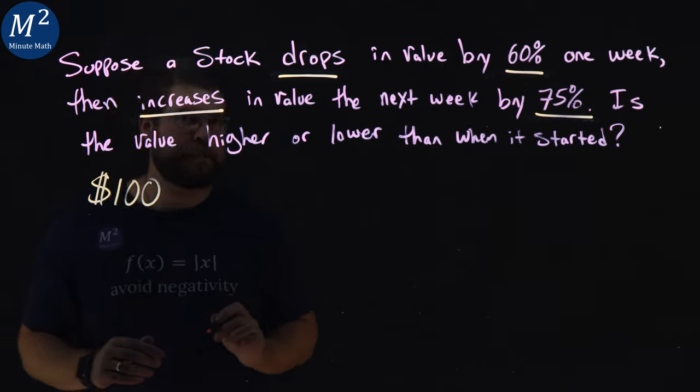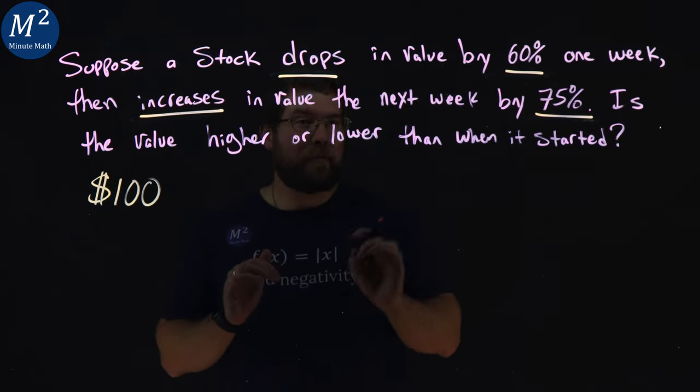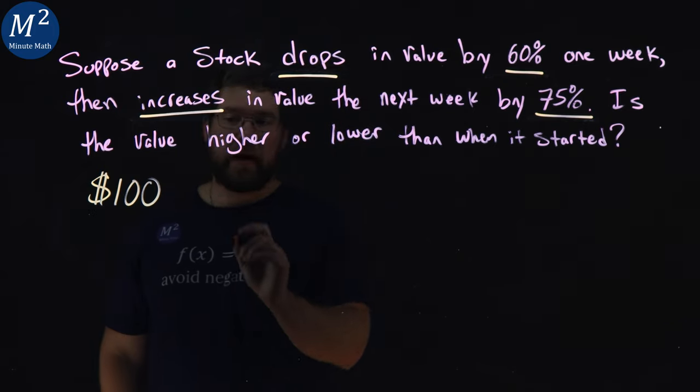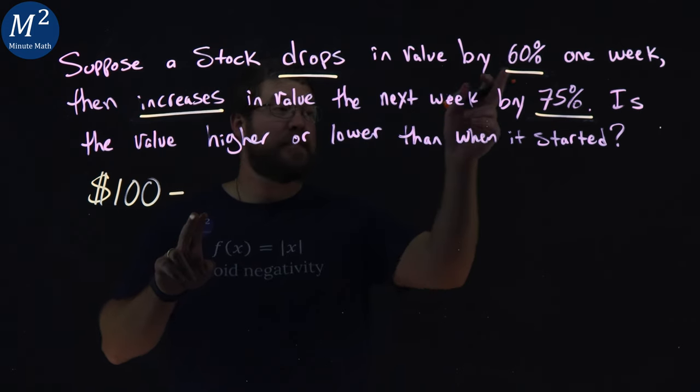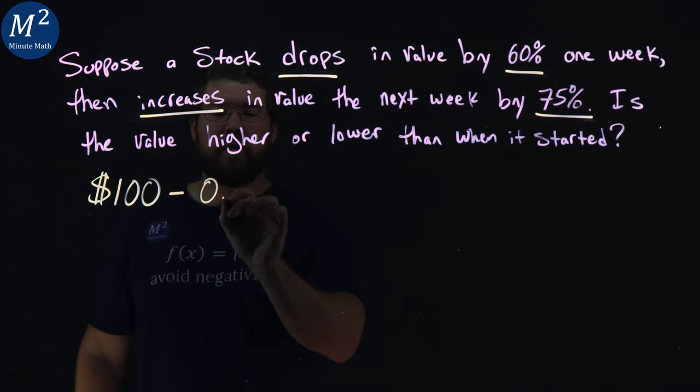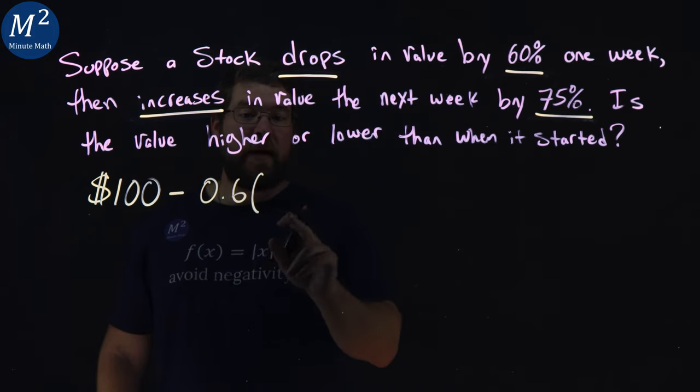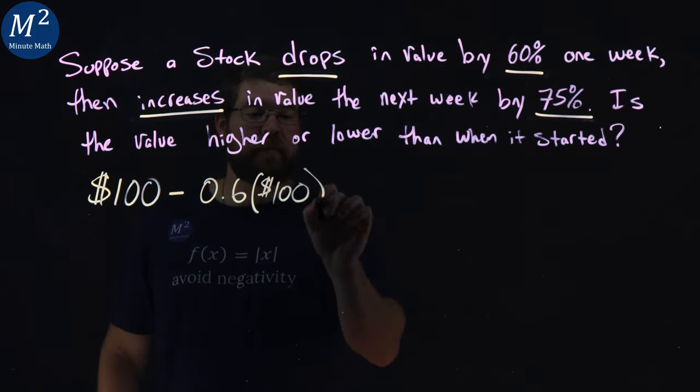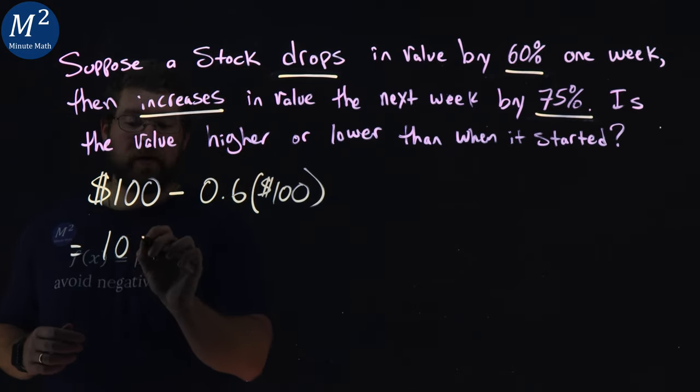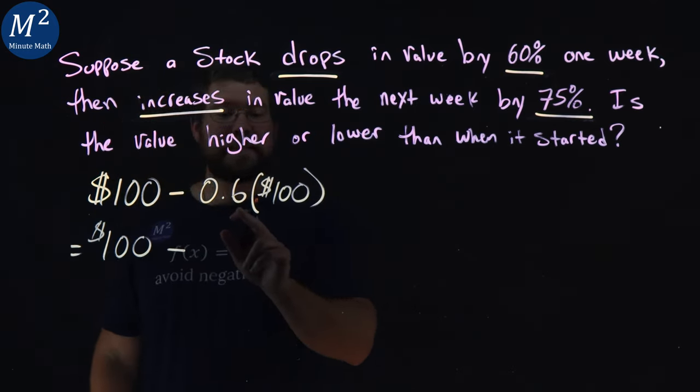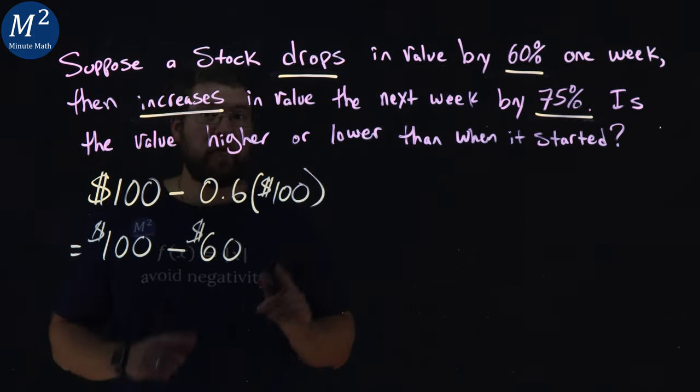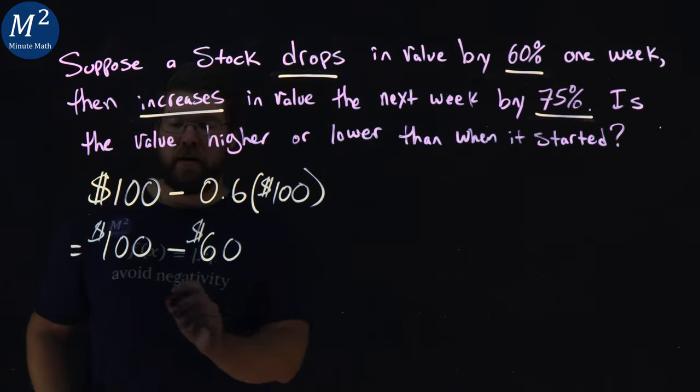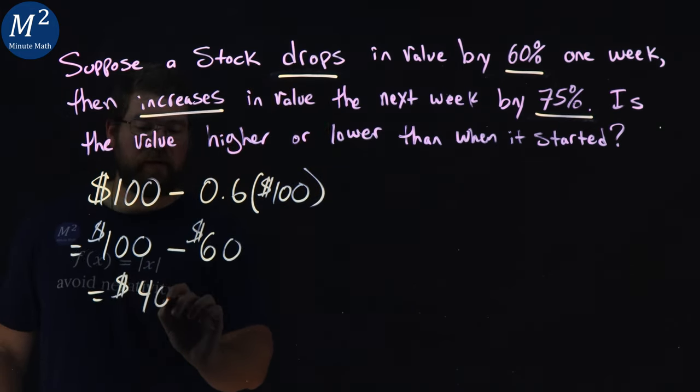$100. After the first week, it drops by 60%. So we take the initial value minus a 60% drop. So that's the minus here. And 60% as a decimal is 0.6. We will multiply that by the initial amount, 100. So if we're writing this out, we have 100 here, minus 0.6 times 100 is 60, or $60. So after one week, we take 100 minus 60, we have the stock after one week is $40 one week.